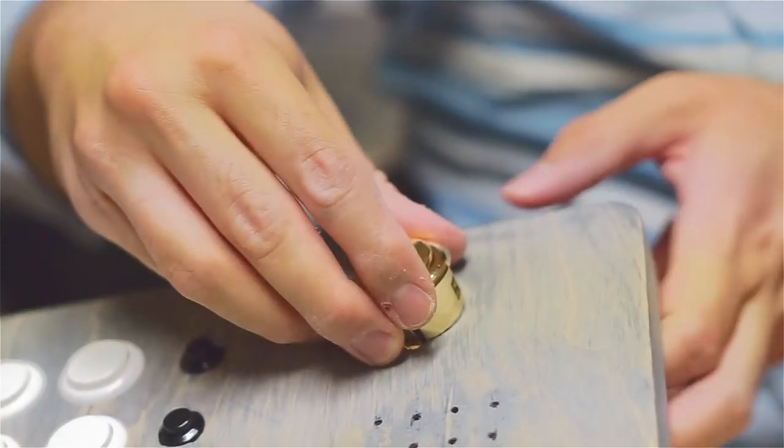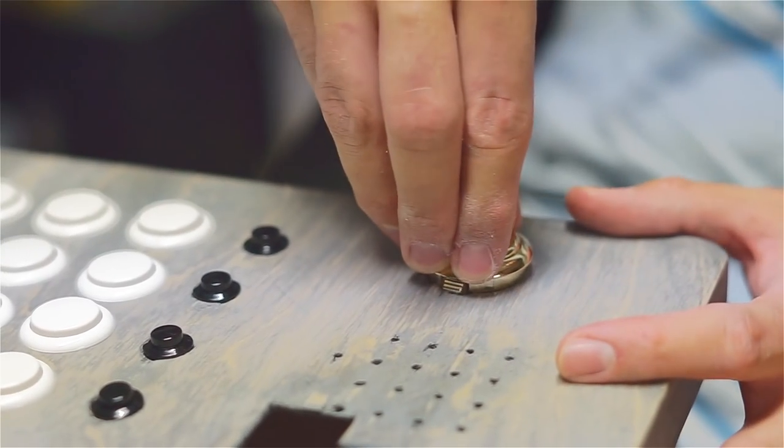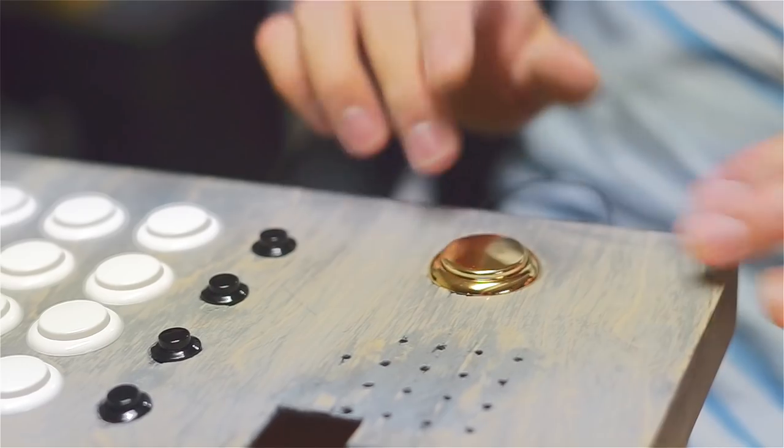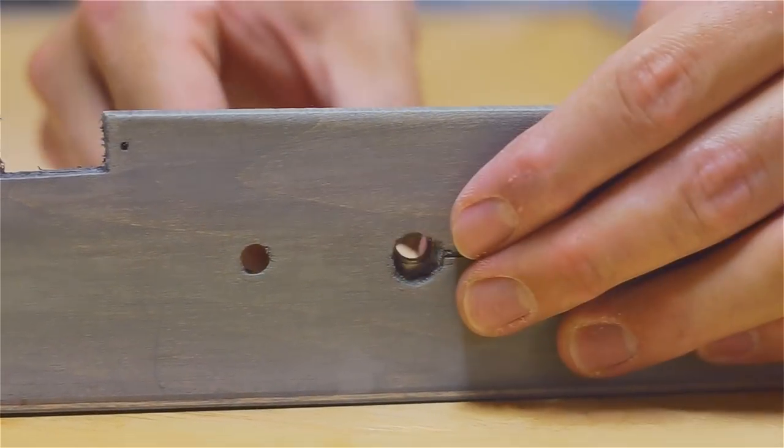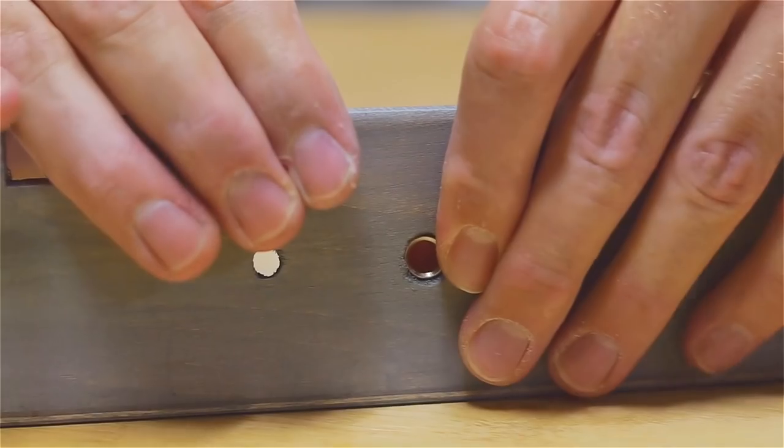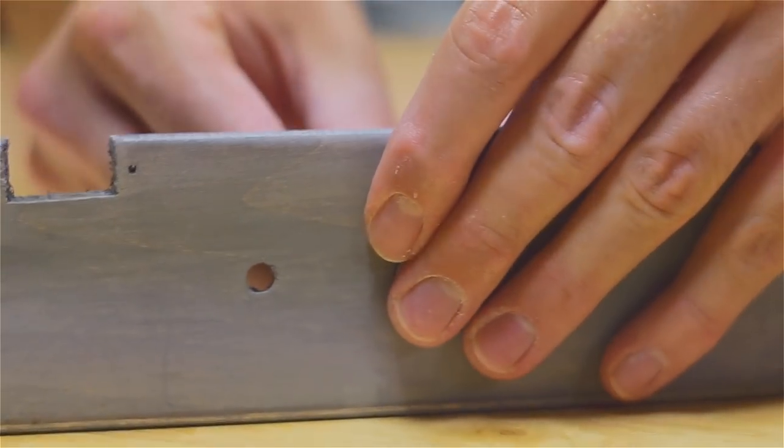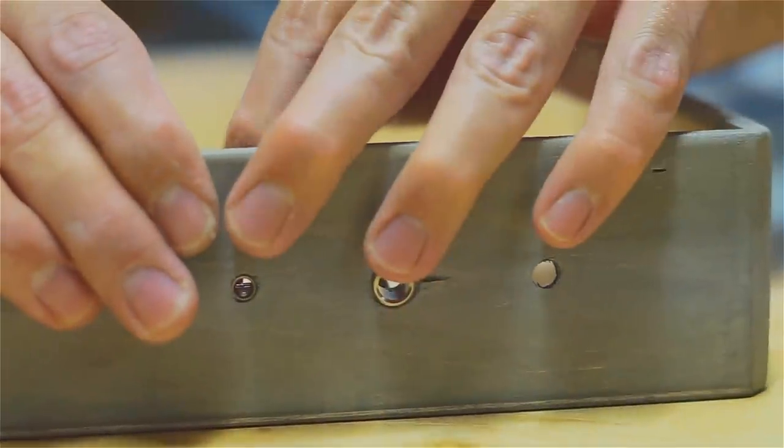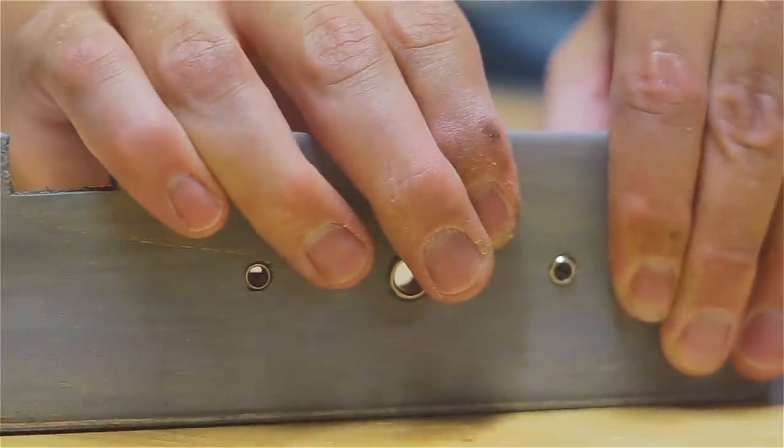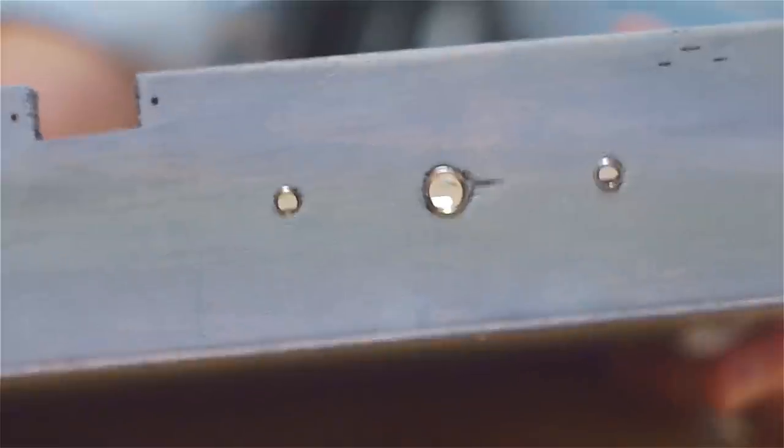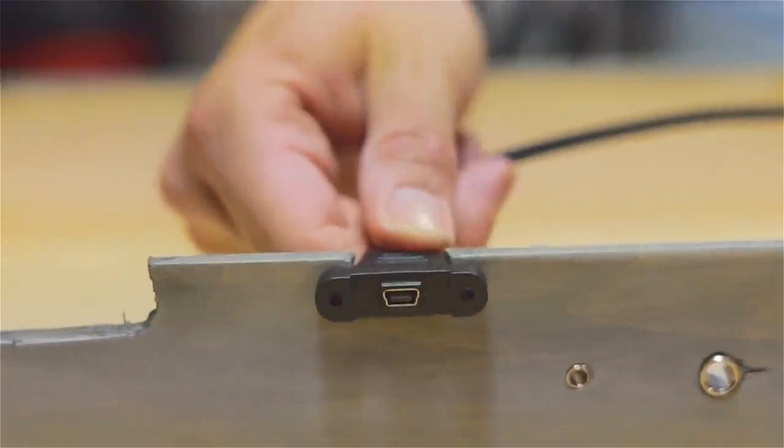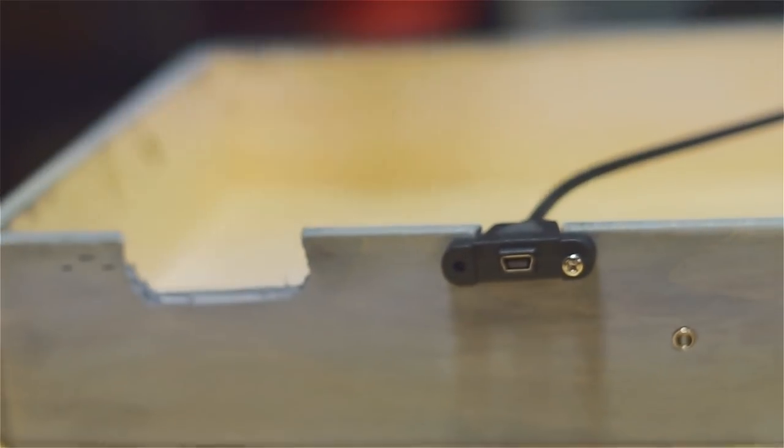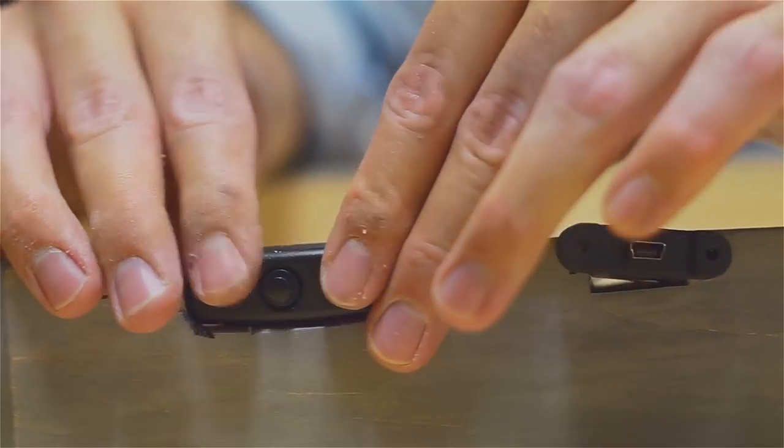Insert your 30mm Sanwa arcade button for your beat repeat function. Now we'll add in your quarter inch and 3.5mm inputs and outputs. Then we'll add our panel mounted micro USB input which we'll attach to the battery setup and also the switch.